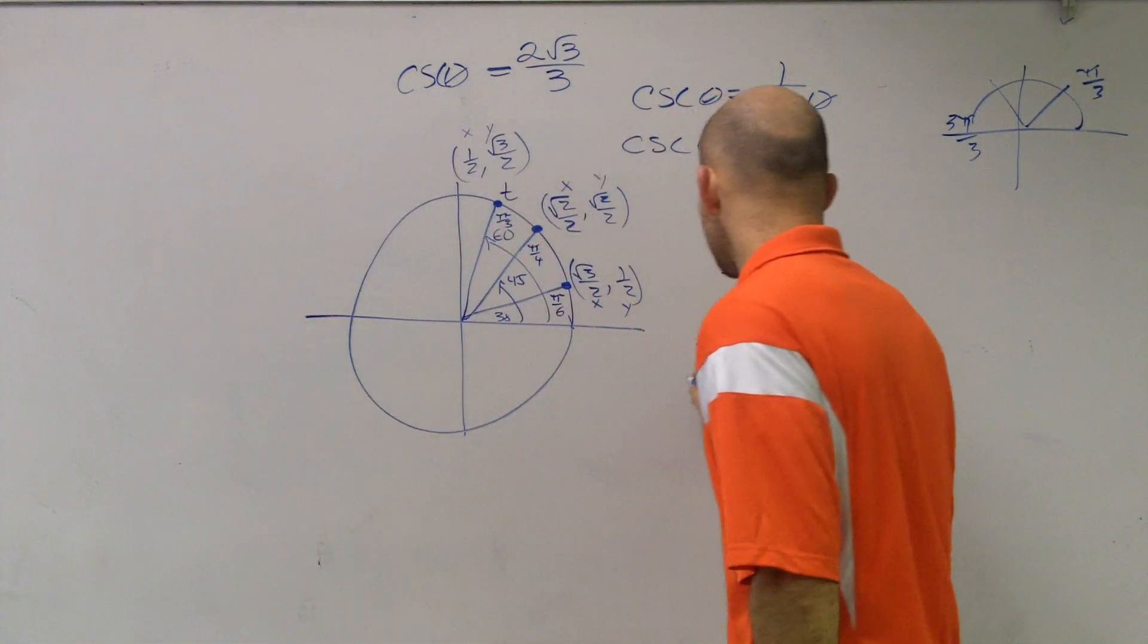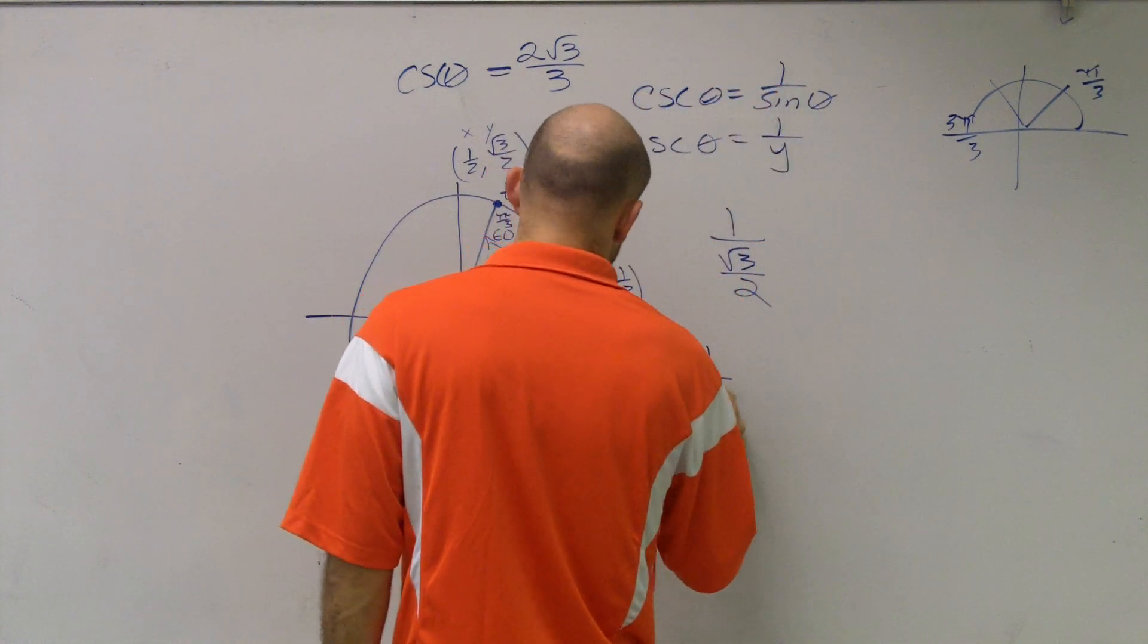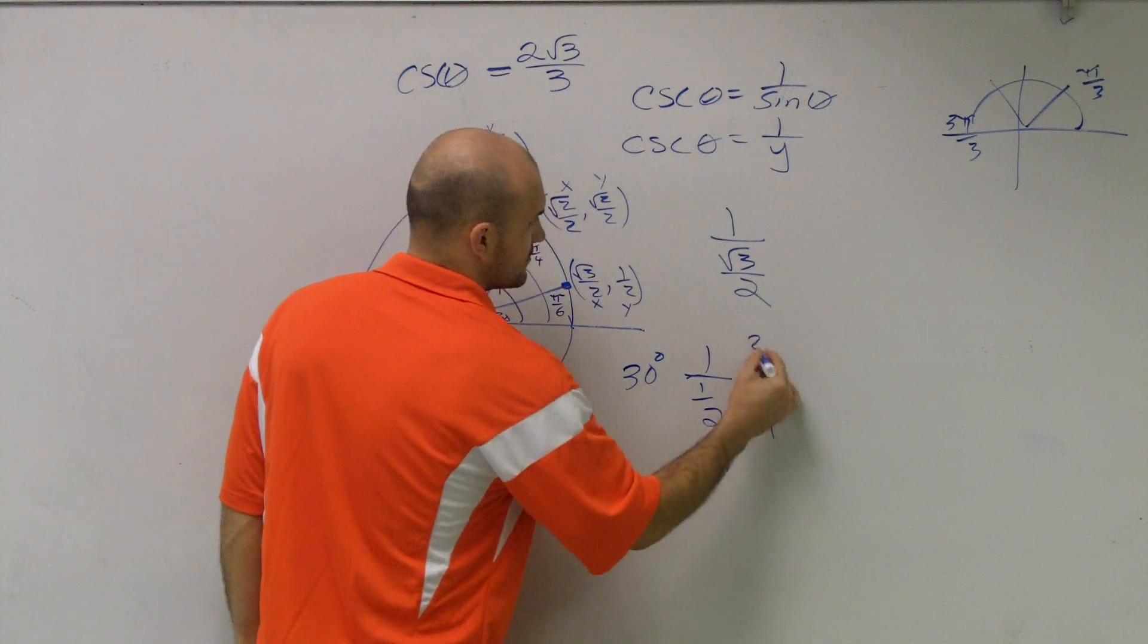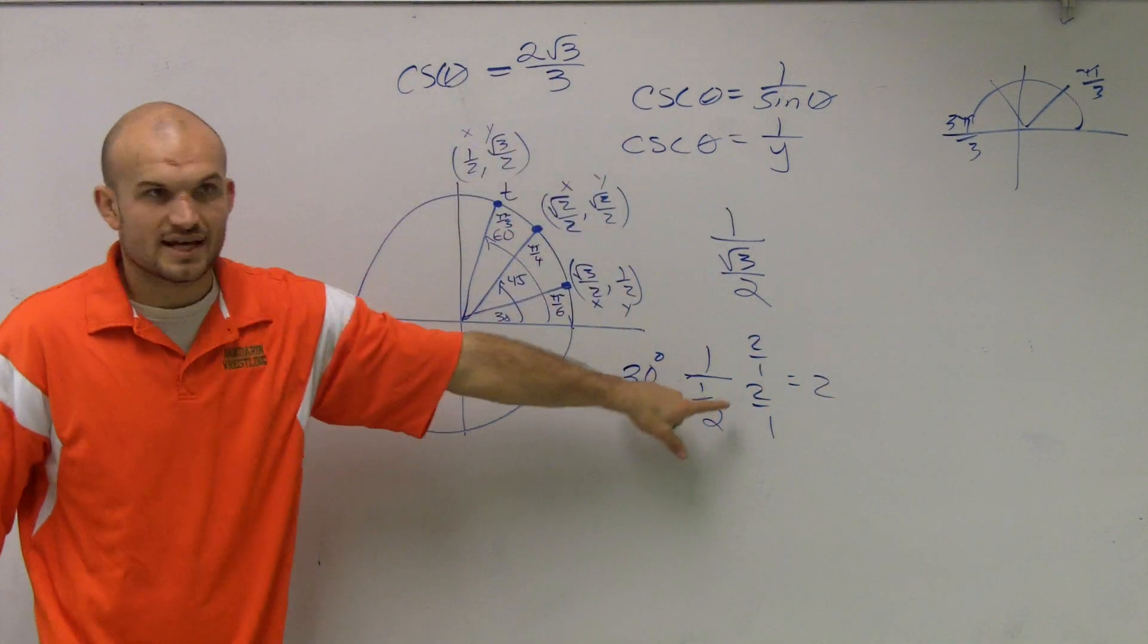Well, I could say, is it 1 over, if it was 30 degrees, it would be 1 over 1 half. Well, when you simplify that, that equals 2. That's not right. We're looking for 2 radical 3 over 3.